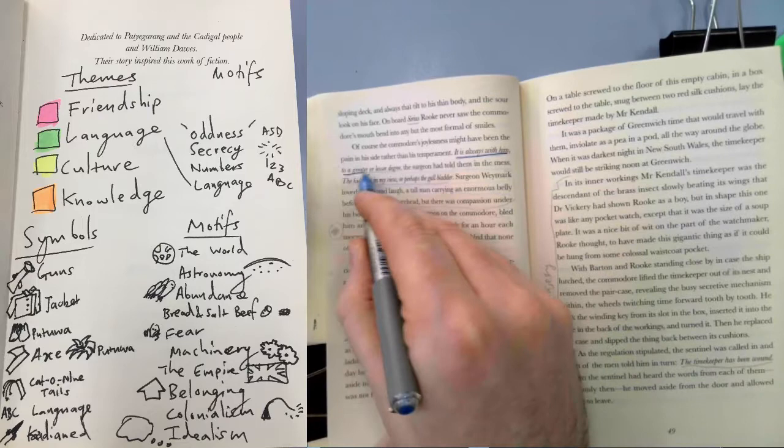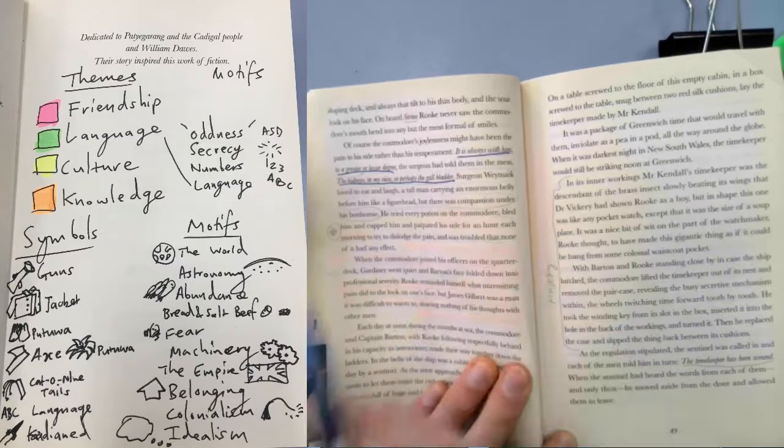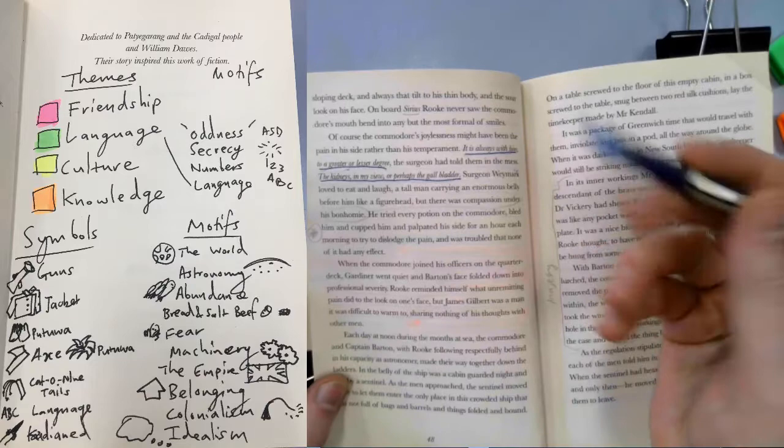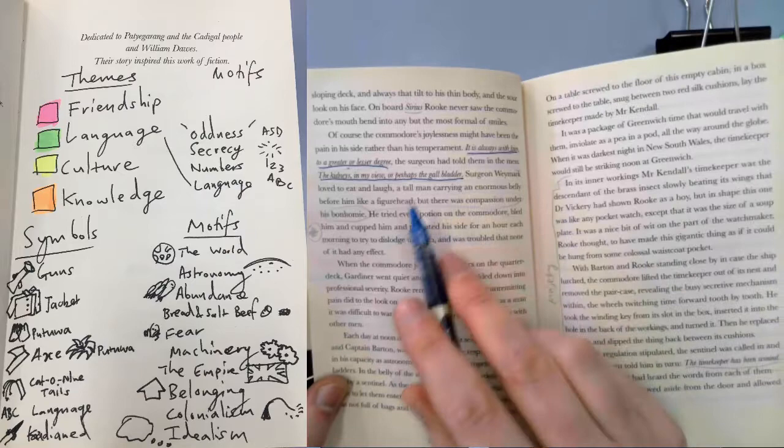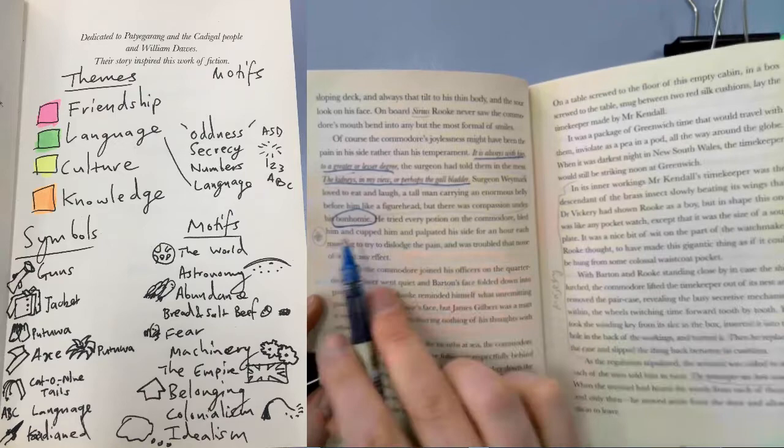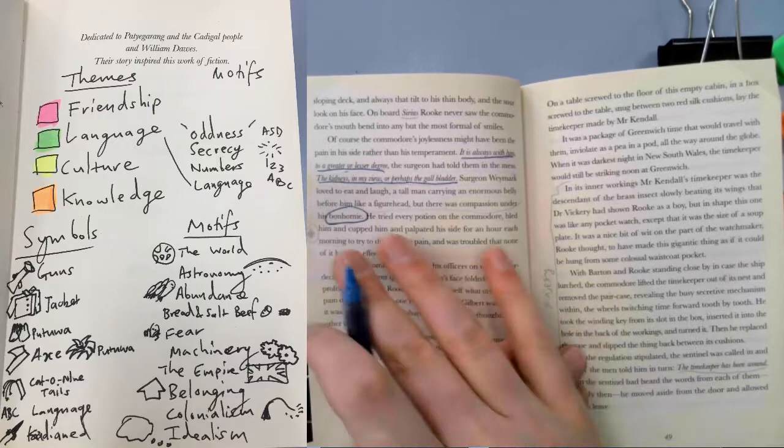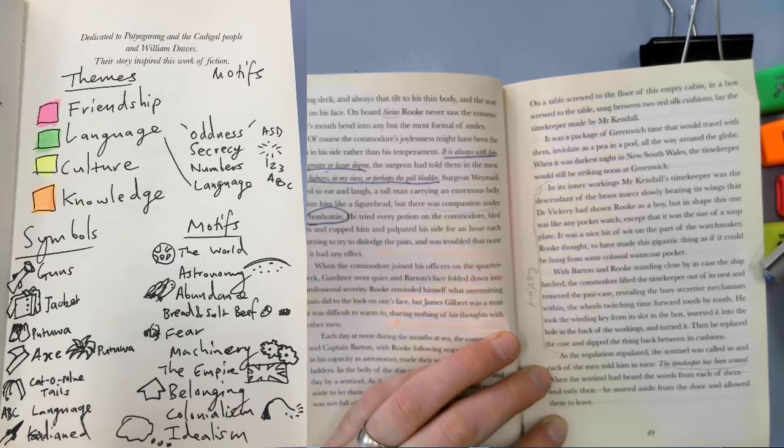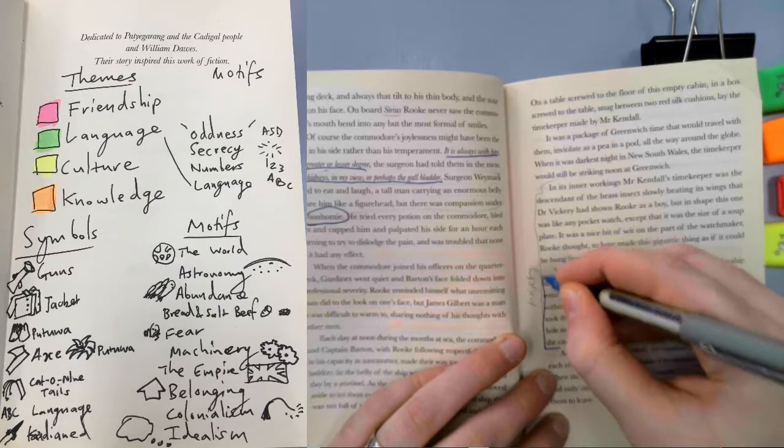Page 48. It is always with him to a greater or lesser degree, the surgeon had told them in the mess, the kidneys in my view, or perhaps the gallbladder. So basically the commodore, I'm not exactly sure on military rank, I think it might be a naval term, but he's got something wrong with him. And so his surgeon looks after him. And again, this is interesting use of italics. We know that Rook has imbibed these little phrases and kept them with him. But there was compassion under his bonhomie. So bonhomie is kind of like bohemian. That's the original stem of bohemian. It just means being loose, being happy, being joyous, being free, which is something that the surgeon is. But the commodore definitely is not.